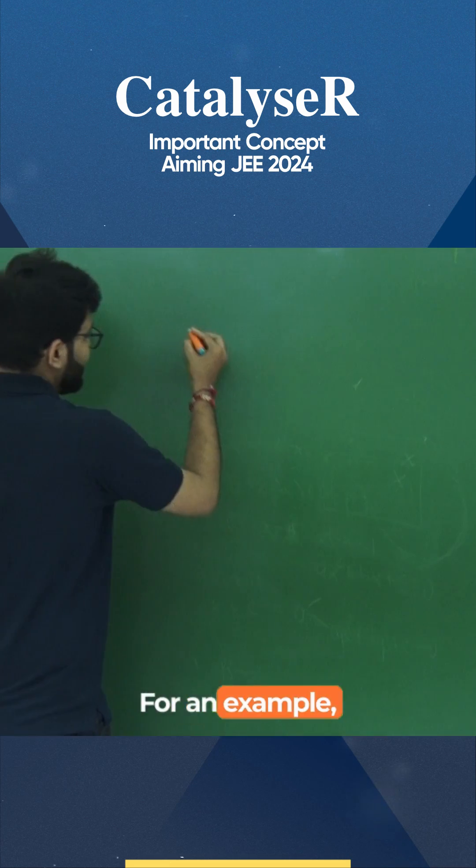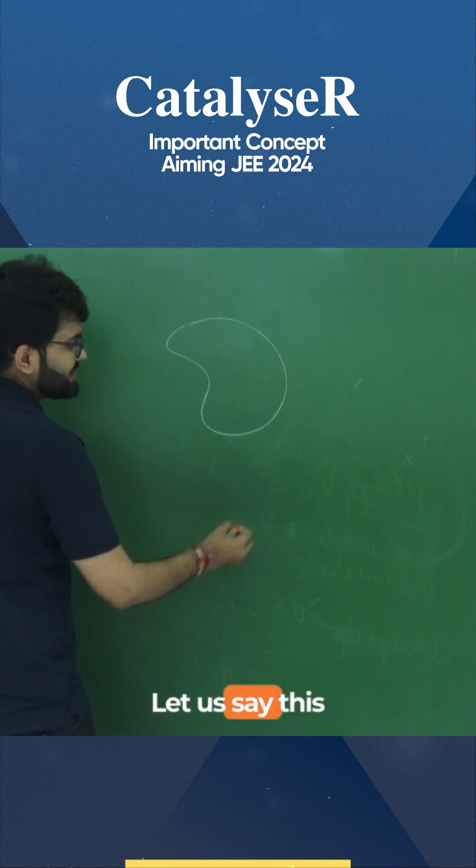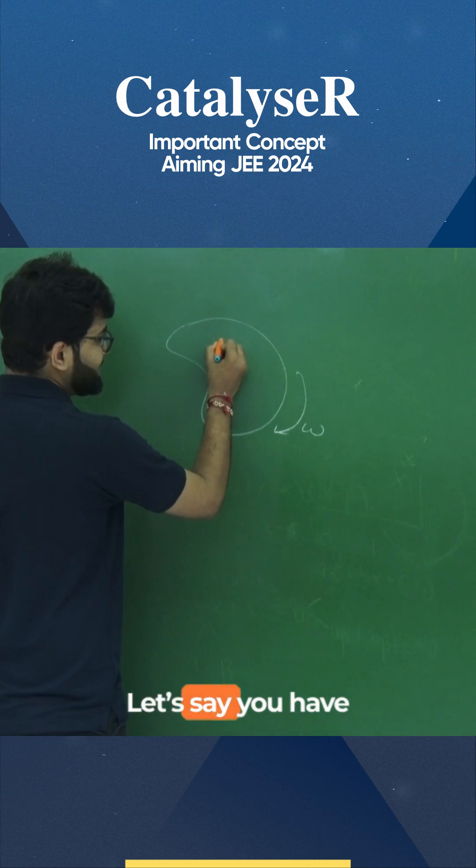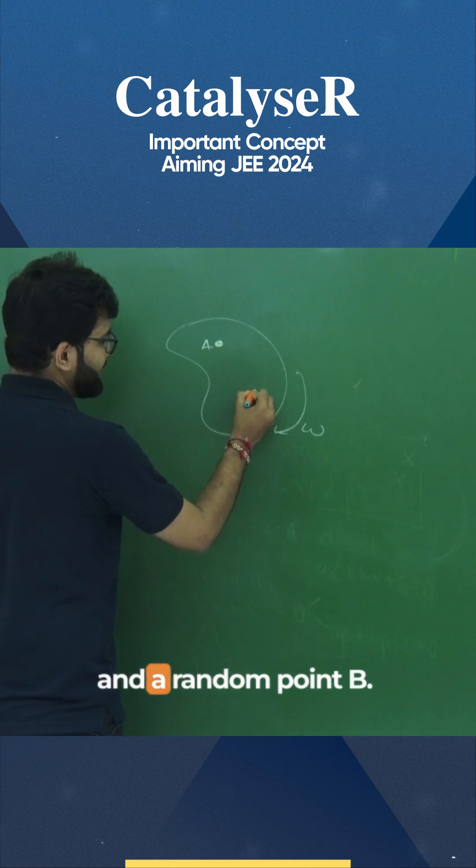For an example, let's take a random potato. Let us say this potato is spinning with some constant angular velocity omega. Now let's say you have a random position A and a random point B.